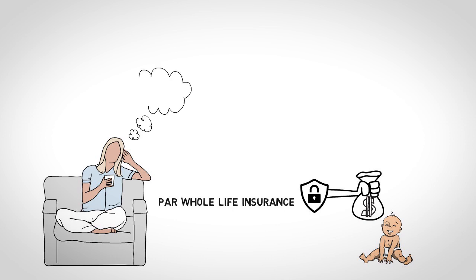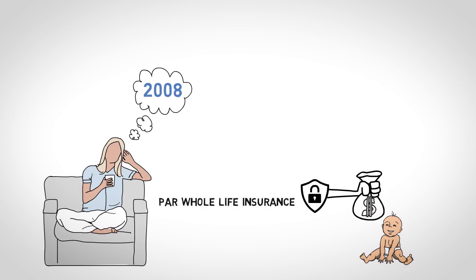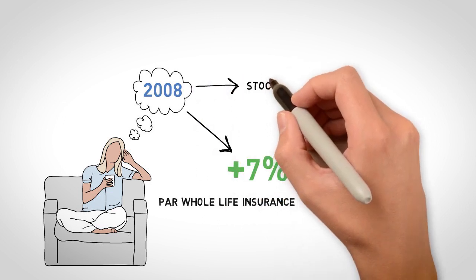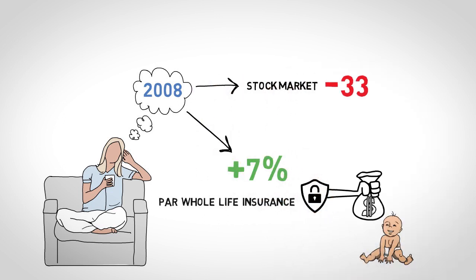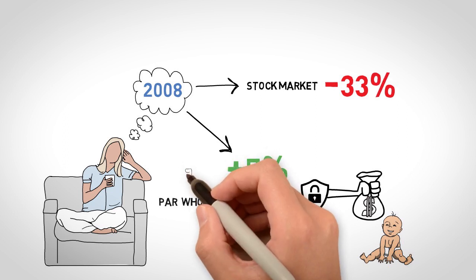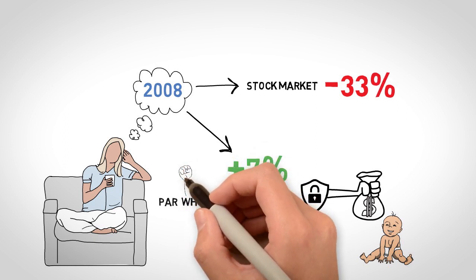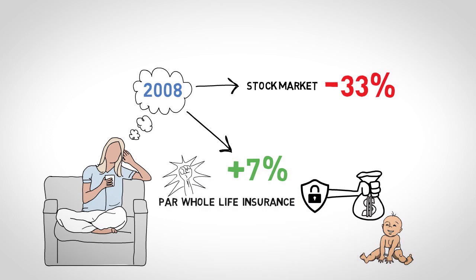Because it remains the most secure financial vehicle available to create and distribute wealth within a family. For example, think back to the year 2008. Then, par whole life insurance holders earned 7%, whereas the stock market took back 33%. So whole life insurance is that steady rock we all need when the fads fail us, and it's available to everyone at every income level.